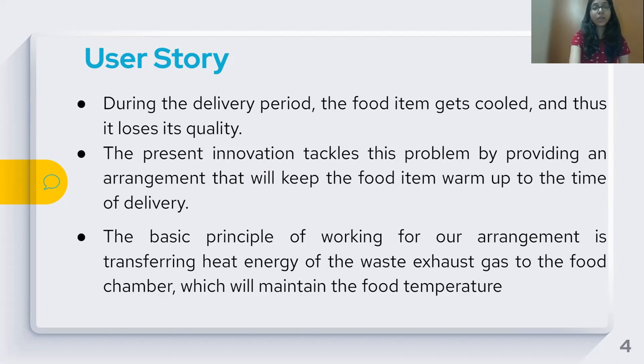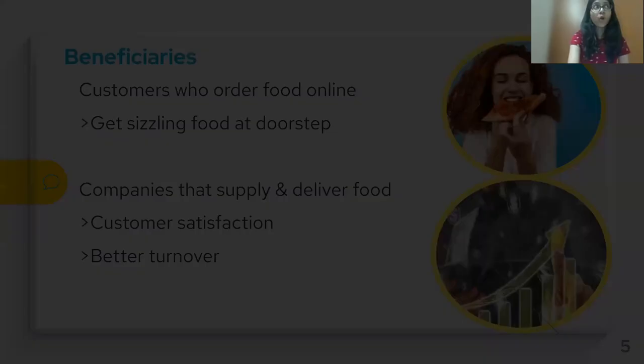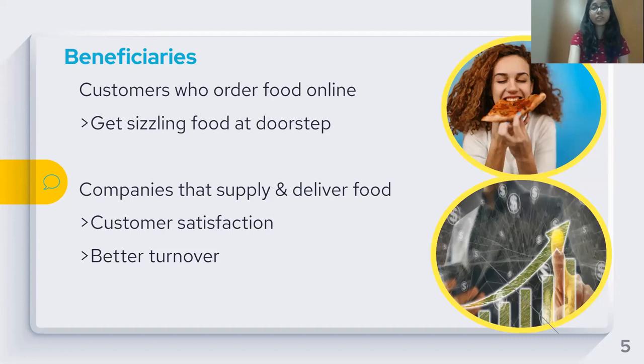Still, some techniques are not fully viable for commercial purposes. The basic principle of working for our arrangement is transferring heat energy of the waste exhaust gas to the food chamber, which will maintain the food temperature and also reduce the heat from the exhaust. What benefits can one get due to this innovation? Individuals who order food will get hot and sizzling food at their doorsteps. Companies that supply and deliver food will get a five-star rating and customer satisfaction, which can also result in better turnover.